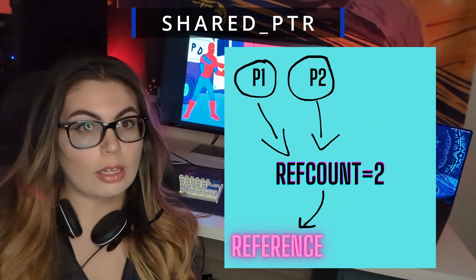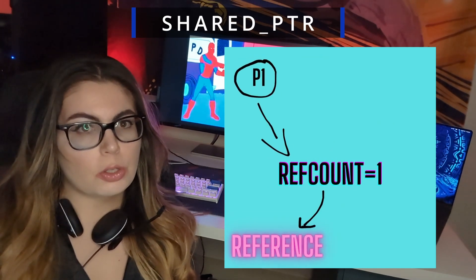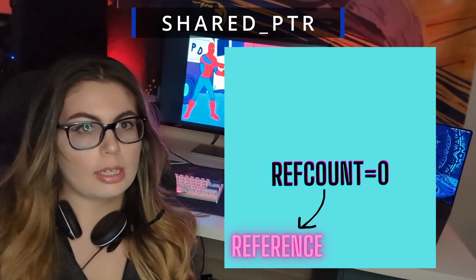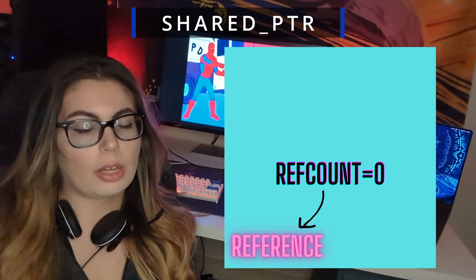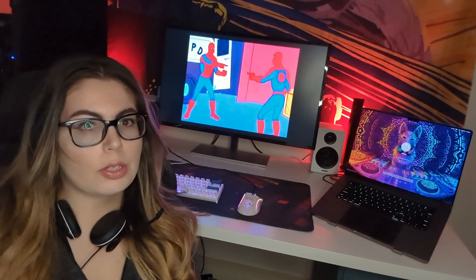Every time one of these pointers gets deallocated, it decrements the count. The original object is only deleted when all the shared pointers are deleted or deallocated — basically when the reference count becomes zero.